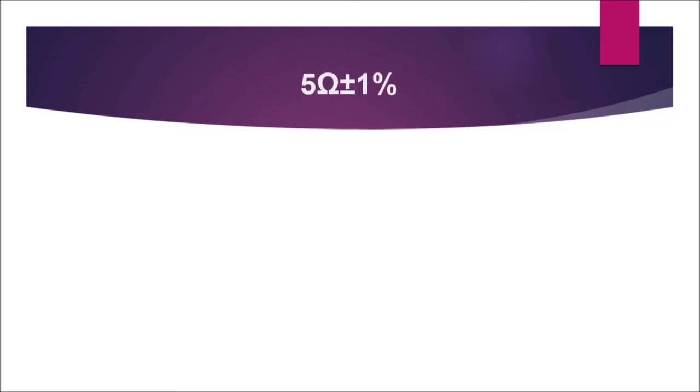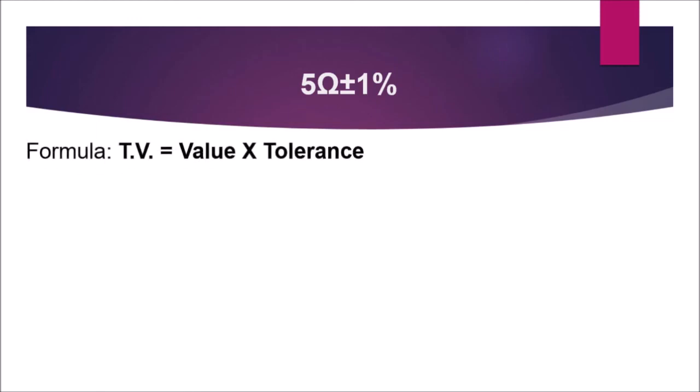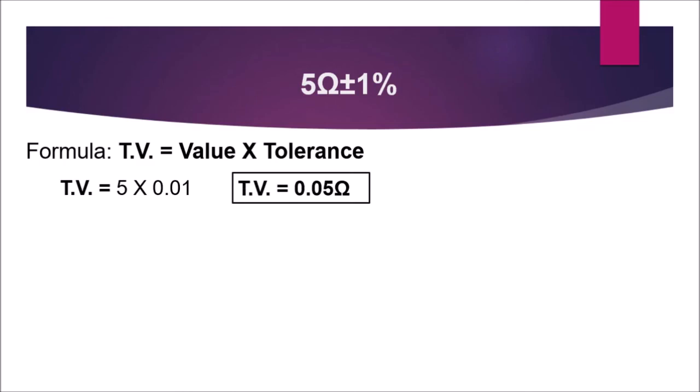Let's have another example: 5 ohms ±1%. 1% converted to decimal is 0.01. We compute the tolerance value: value multiplied by the tolerance, so 5 × 0.01 gives us 0.05 ohms.